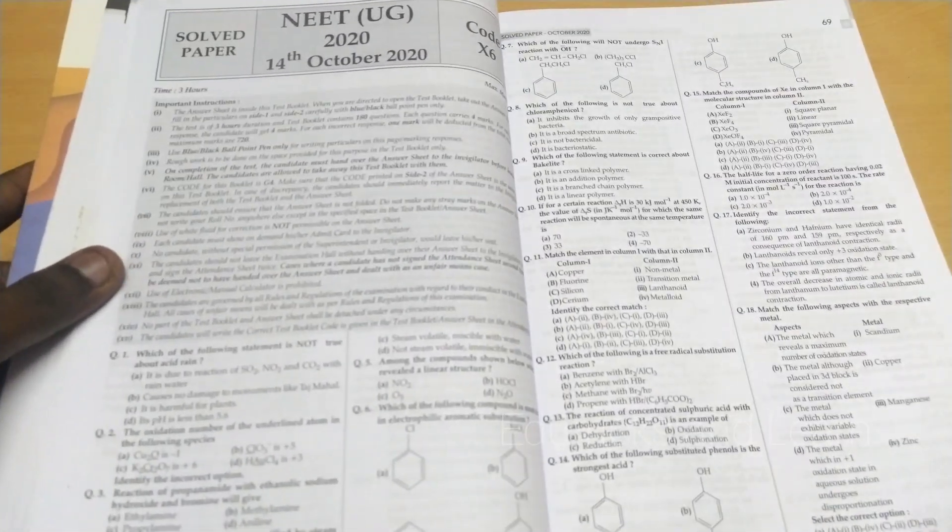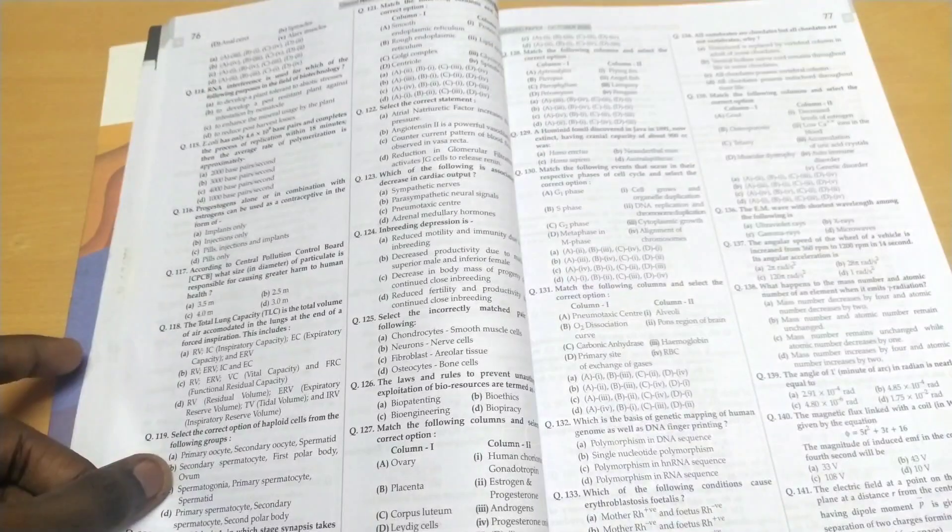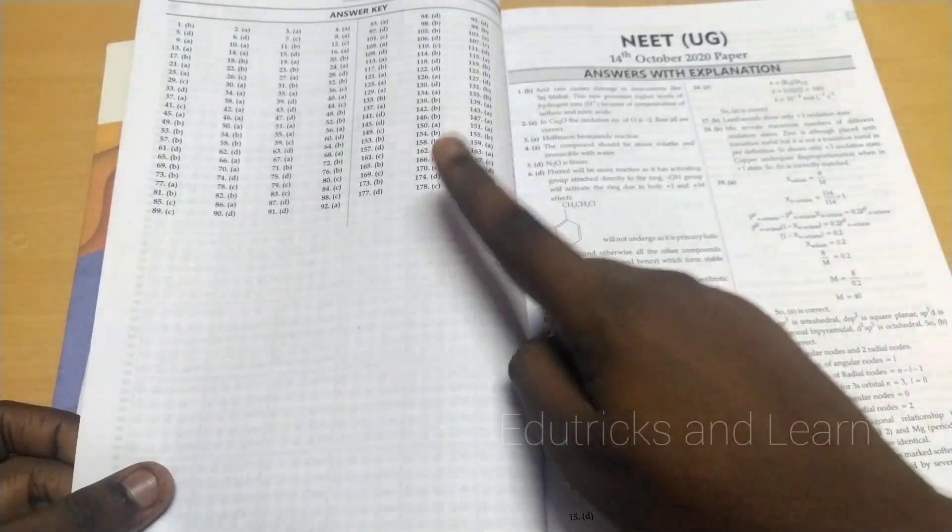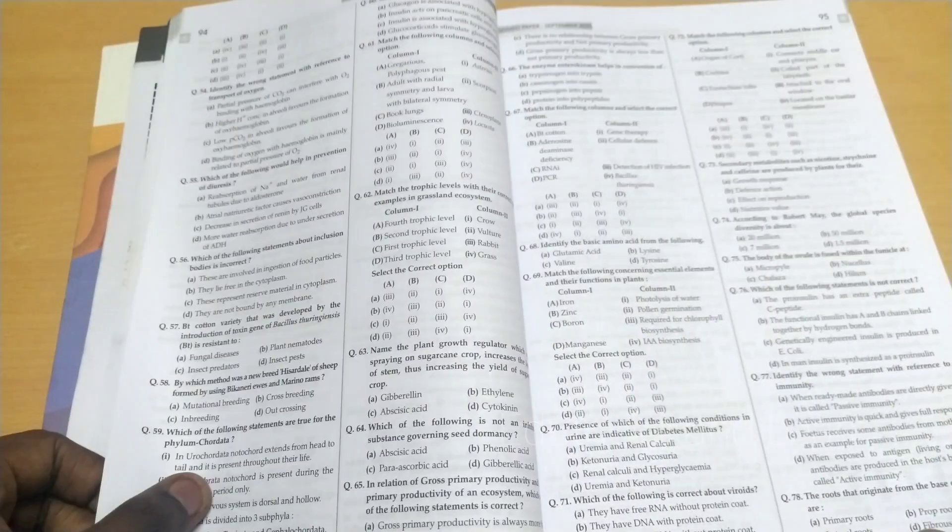In NEET 2020 solved papers, they've given physics, chemistry, zoology, and botany with answers and OMR sheets. In NEET 2020, they've given another code paper with the same: physics, chemistry, botany, zoology, answer key, and OMR sheet.